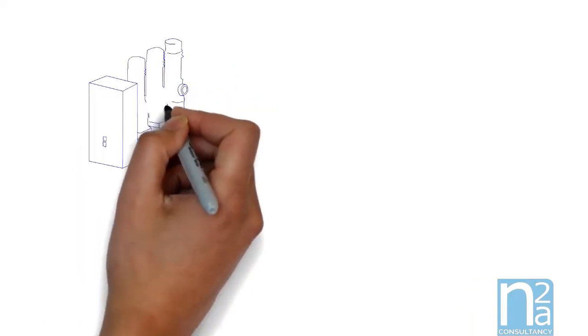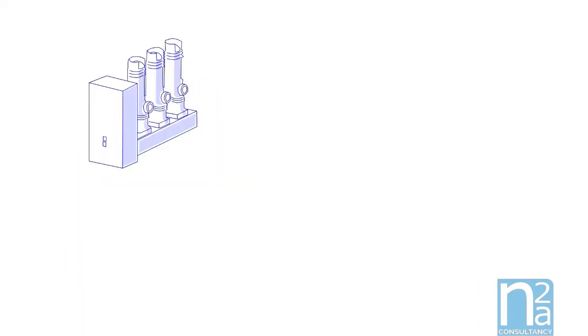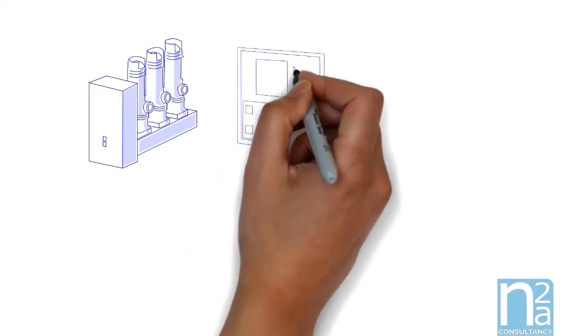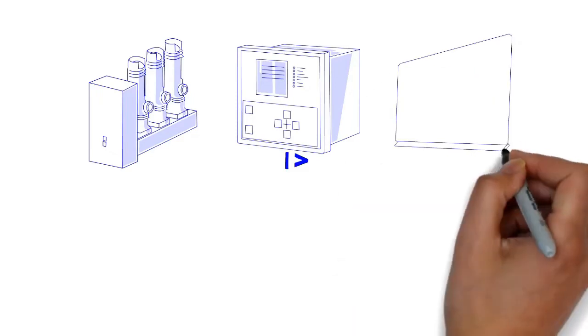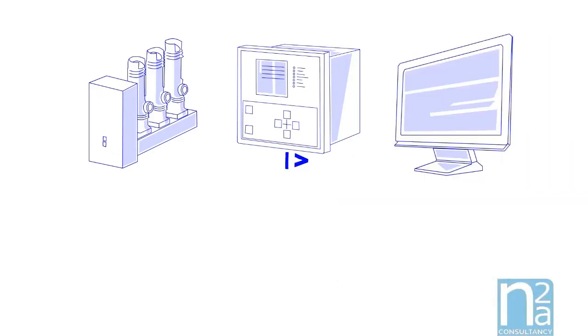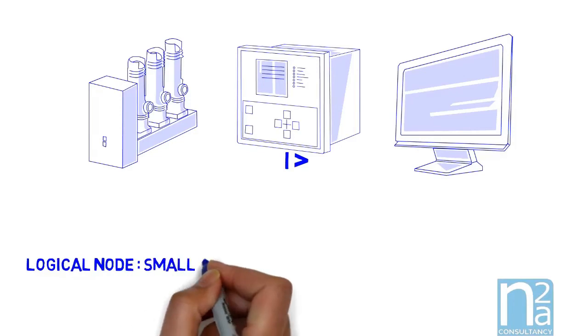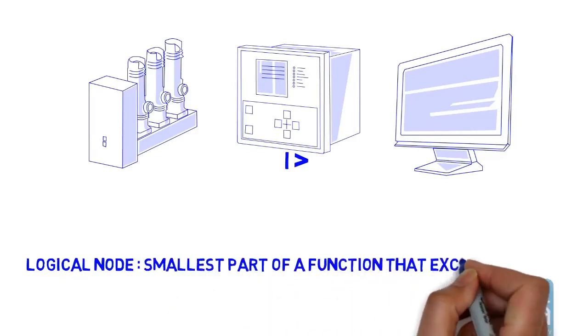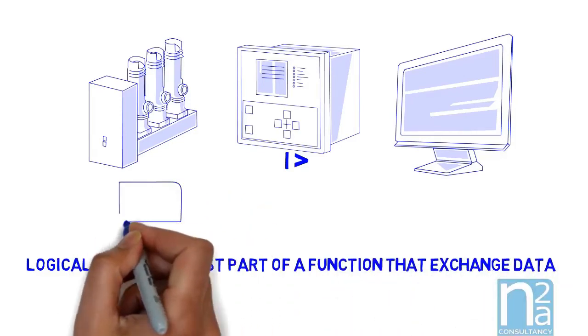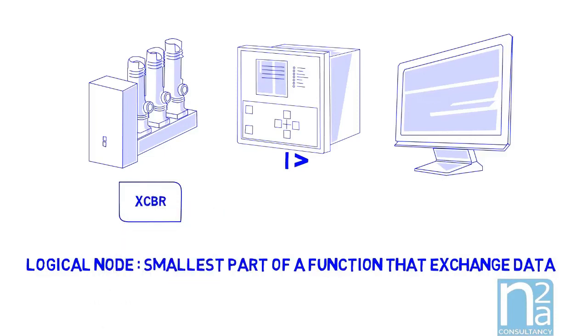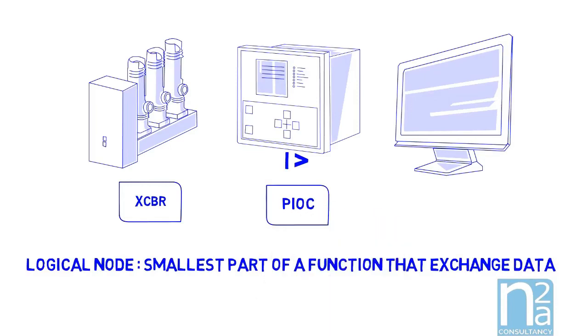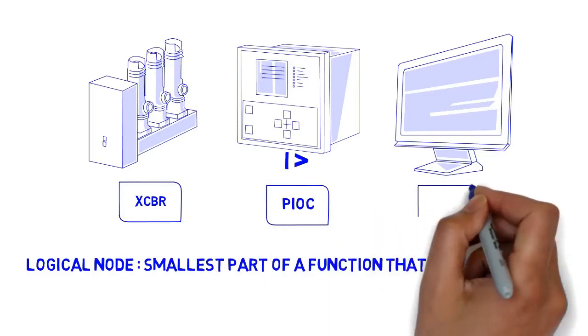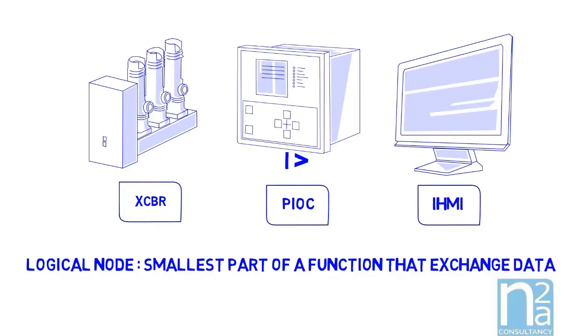Now we had described the communication process, we need to define the structure of the information. IEC 61850 has modeled all devices and functions in a switchgear with an object-oriented description. The key element of this modelization is the logical node. A logical node represents the smallest part of a function that exchanges data with a predefined name, from a device from the process level like a circuit breaker XCBR, or a logical function from the bay level like an instantaneous over-current protection PIOC, or a function from the station level like the HMI called IHMI.